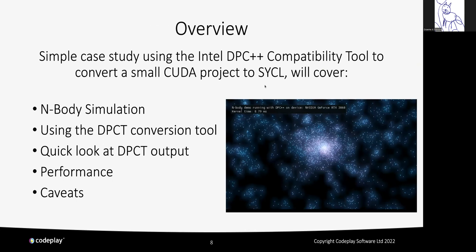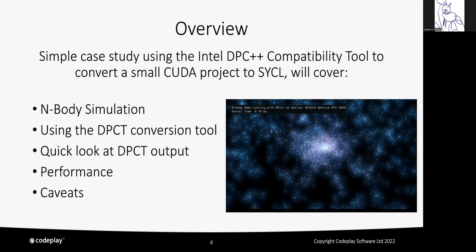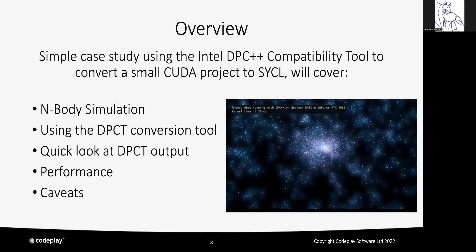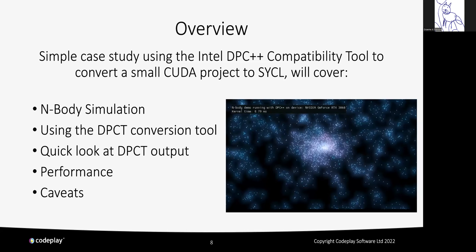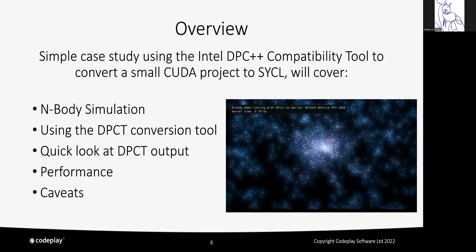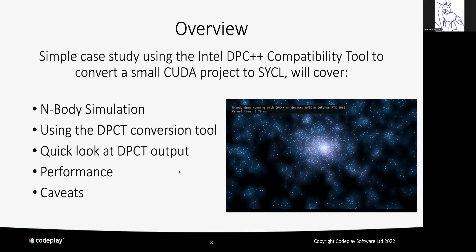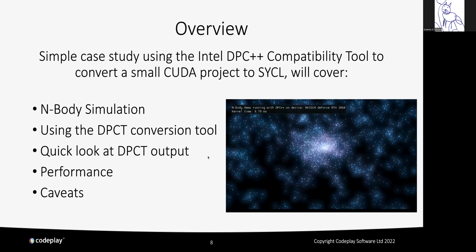This talk focuses on a simple simulation I wrote as a demo: an N-body galaxy simulator where all particles attract each other and move according to Newton's second law. I wrote this in CUDA, then ran it through the DPCT tool to produce SYCL output, compiled it, and ran it again. This is a demo to show off what the tool can do, and I want to be clear this is not a marketing spiel — I'll talk about the caveats.